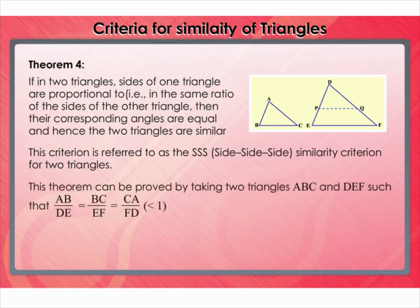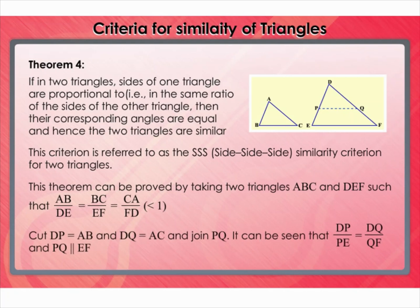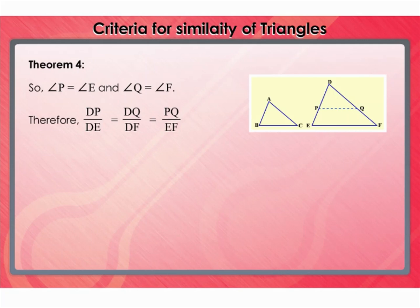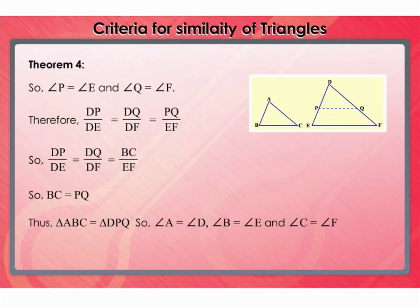This theorem can be proved by taking two triangles ABC and DEF such that AB/DE equals BC/EF equals CA/FD, less than 1. Cut DP equal to AB and DQ equal to AC, and join PQ. It can be seen that DP/PE equals DQ/QF and PQ is parallel to EF, so angle P equals angle E and angle Q equals angle F. Therefore DQ/DF equals BC/EF, so BC equals PQ, and thus triangle ABC is congruent to triangle DPQ. So angle A equals angle D, angle B equals angle E, and angle C equals angle F.